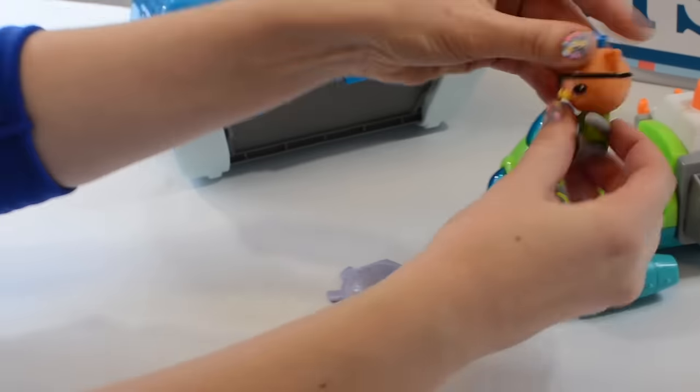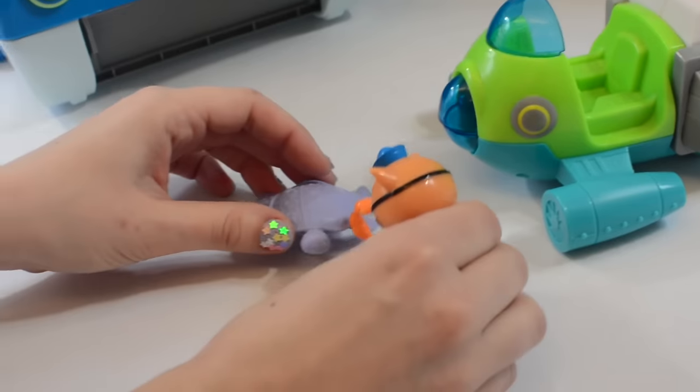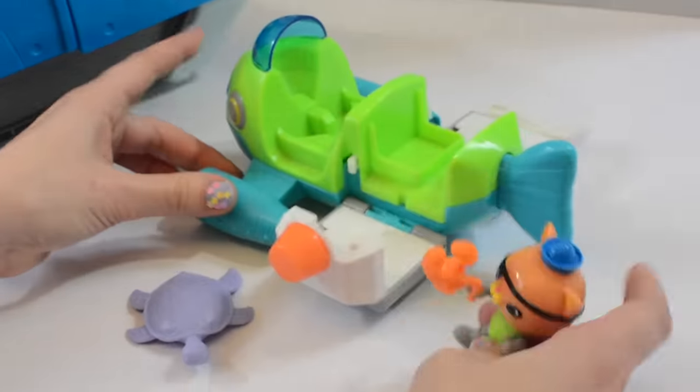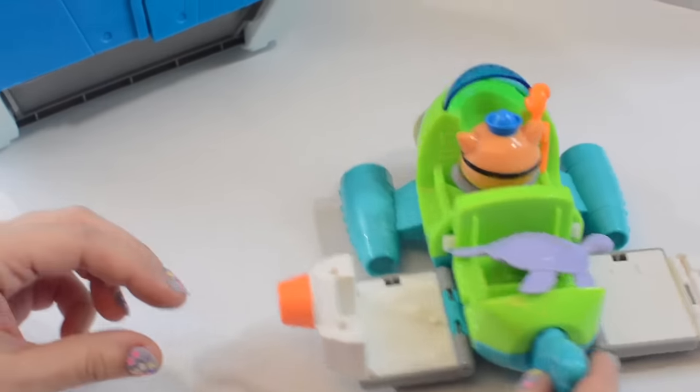Oh, guys! There he is! The sea turtle! And look, Quasi can use his rescue tongs to grab the sea turtle and put him in the gup P! Great job, Octocadets! Now it's time to head back to the gup W!